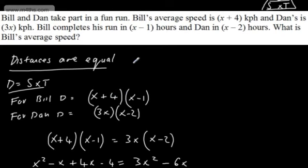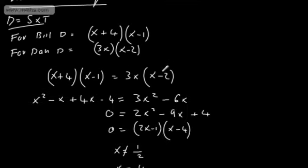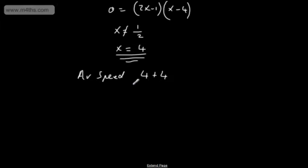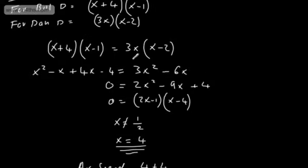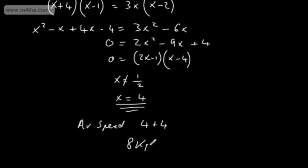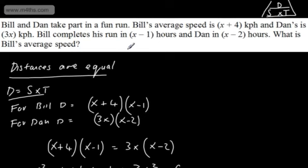With X equals 4, Bill's average speed is X plus 4 equals 4 plus 4 equals 8 km/h. We need to use the correct units: kilometres per hour. So Bill's average speed is 8 kilometres per hour. This is fairly straightforward once you recognise it as a speed-distance-time problem.